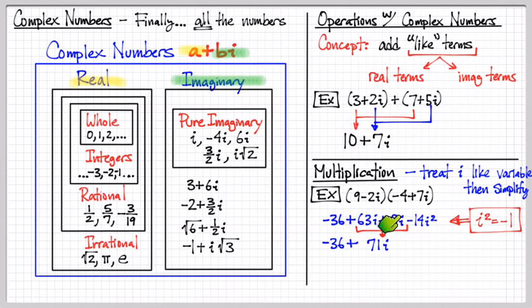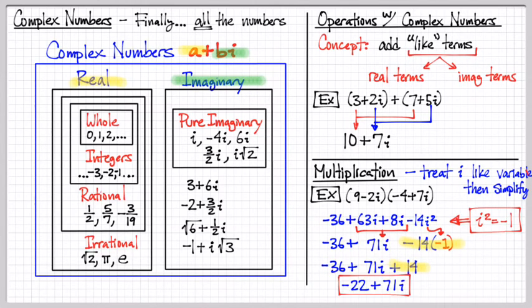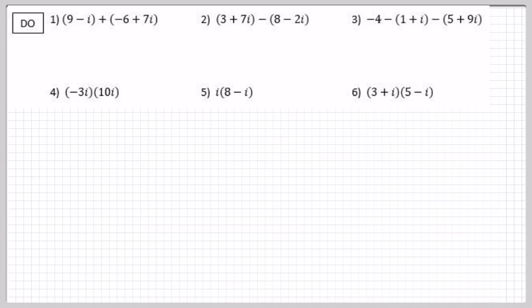So we'll add our like terms here, the imaginary terms, 71i. But in the case over here, i squared, let's replace that with a negative 1. So now, this is a real number. Let's add all the like terms together. Negative 36 and 14. We add together negative 22 plus 71i. Simple concept. So try these out. Just be careful with these negative signs. Remember to distribute the negative signs across. I'll give the answers in 3, 2, 1.